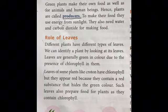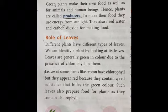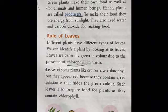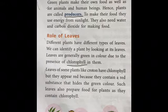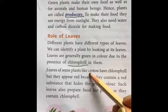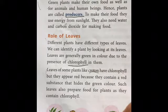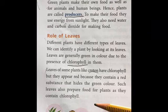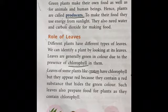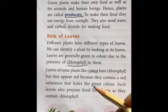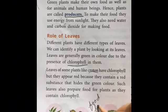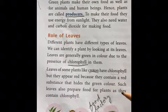Every plant has green leaves, and these leaves contain chlorophyll — the chemical responsible for making the leaves green. We also have the croton plant, whose leaves are somewhat red, but underneath that red color, chlorophyll is present in the form of green color. These leaves are called the food factory of the plant.